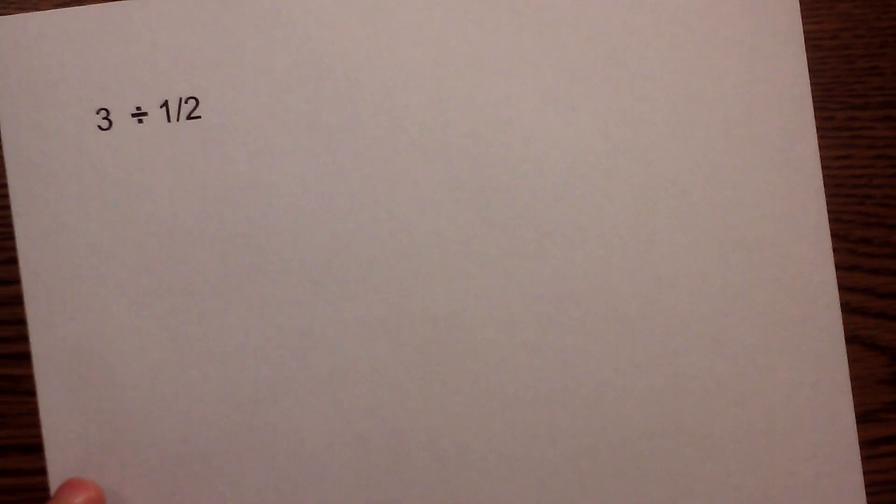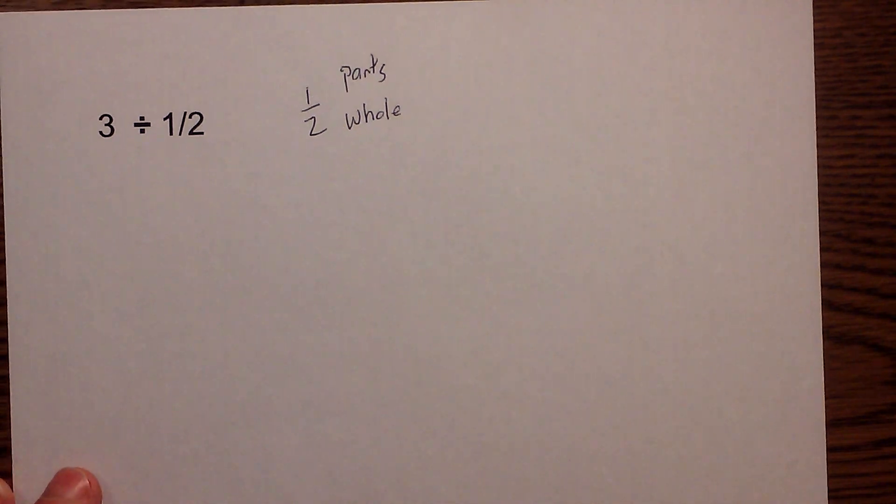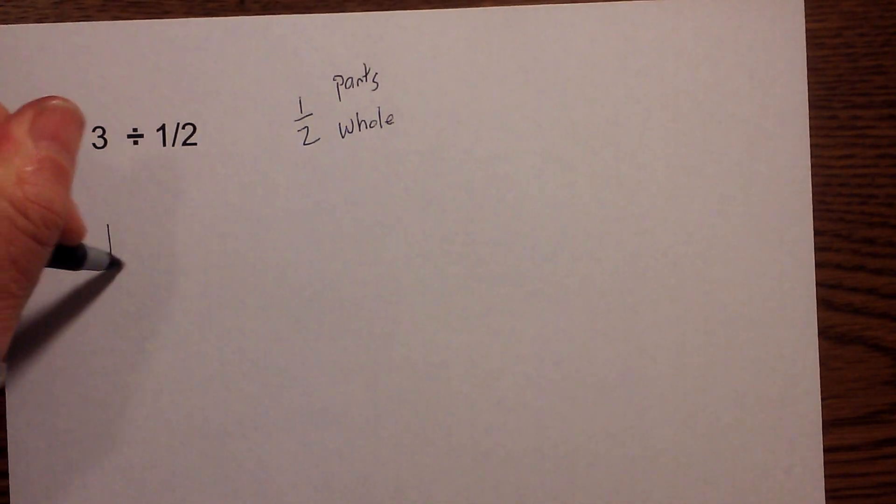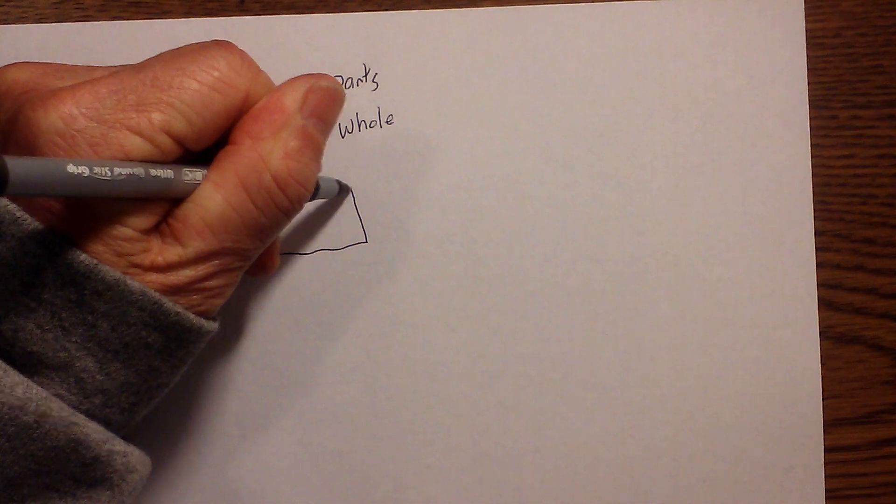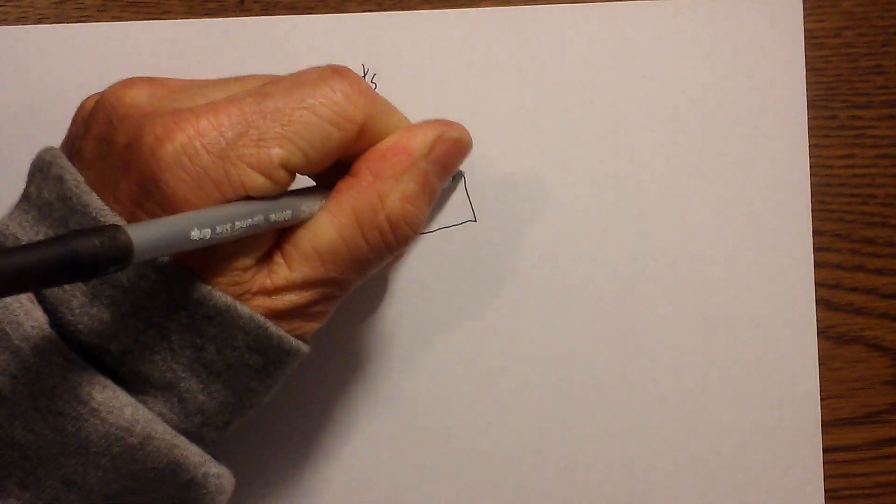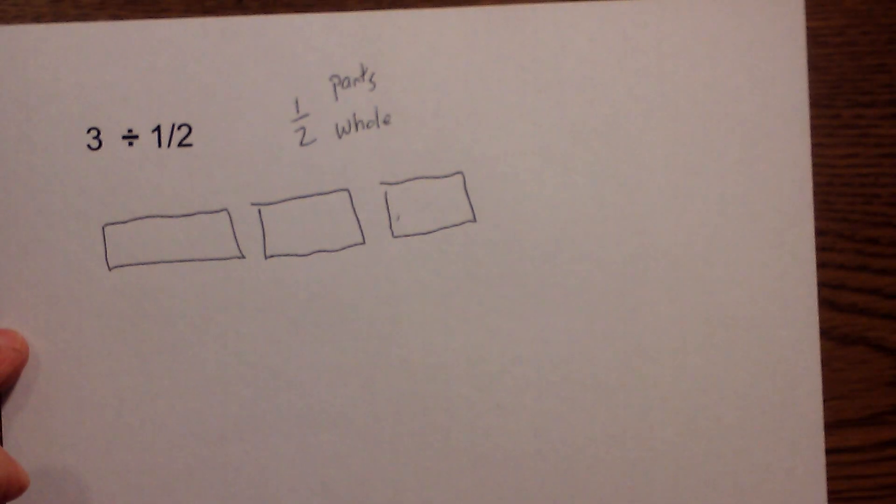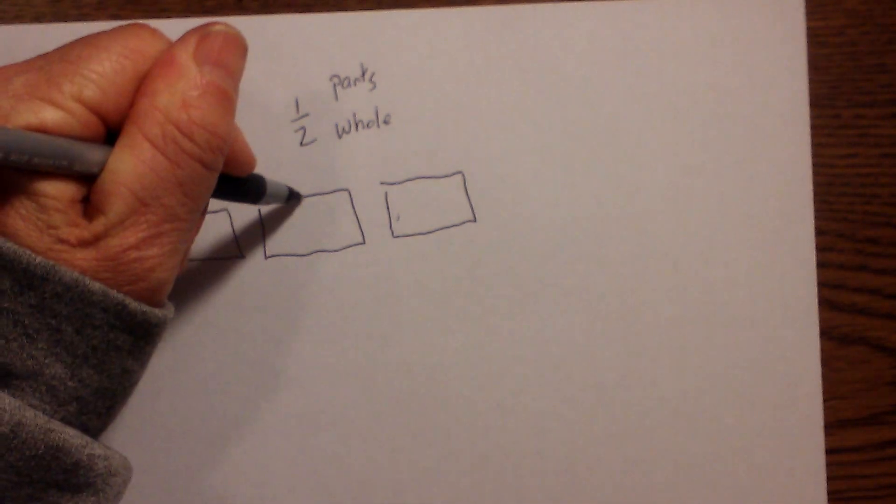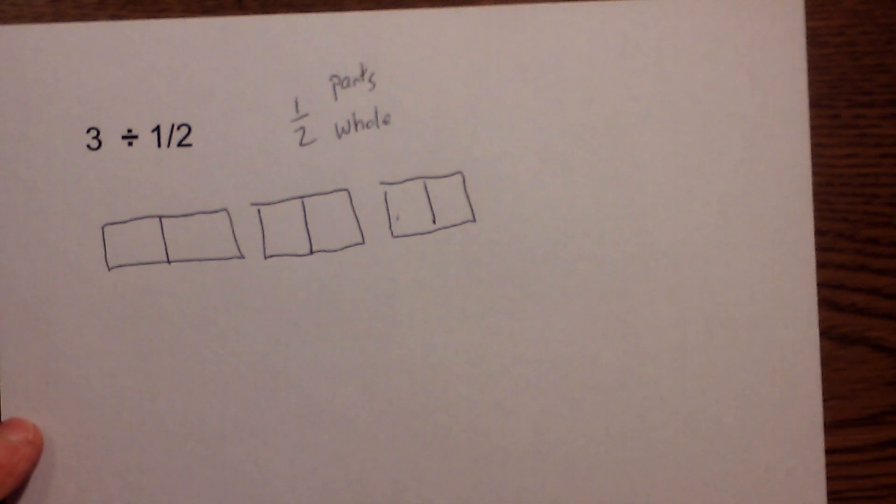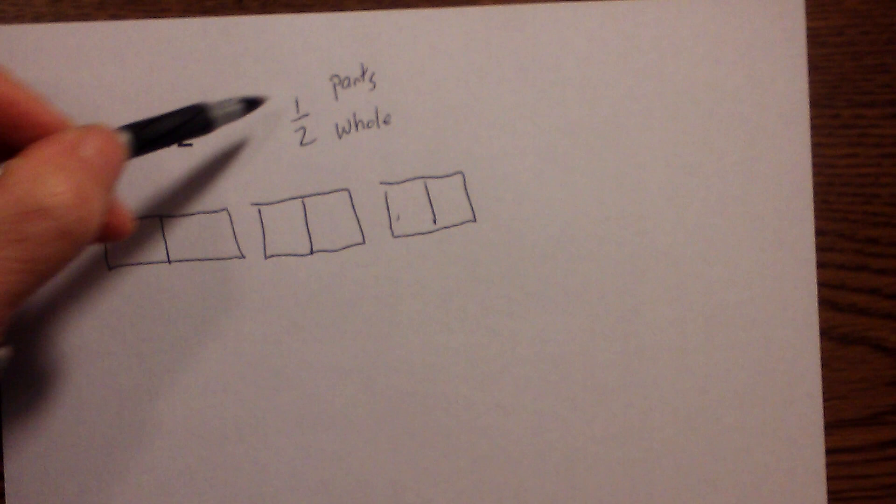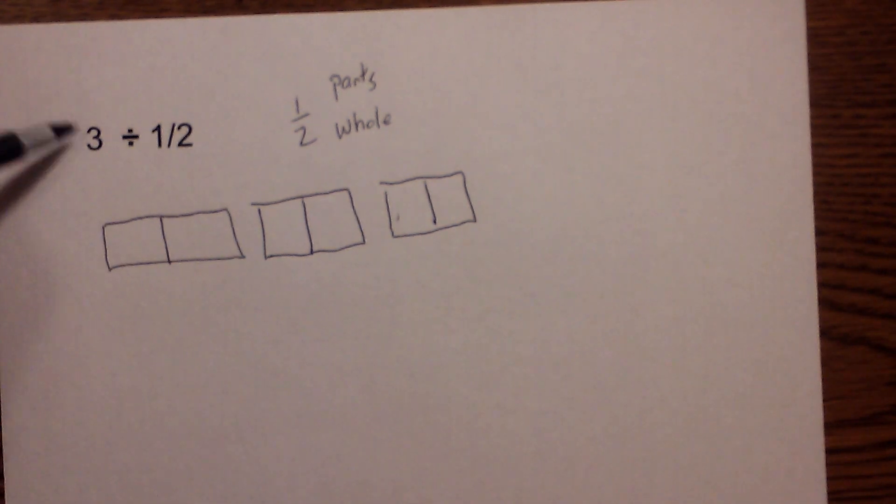We will use three divided by one-half. Remember, one-half means we have parts of the whole. This time, I'm going to divide each of these whole blocks into two parts. I can easily do this.